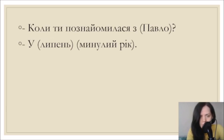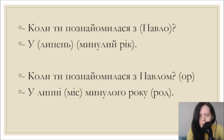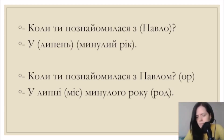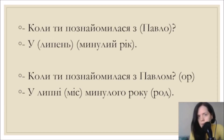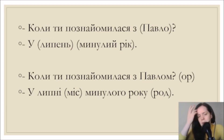The correct answer is: коли ти познайомилася з Павлом? With the verb познайомитися we use the preposition з - to meet with someone, познайомитися з кимось. Just like з цукром used instrumental case, the same happens with Pavlo: з Павлом - we use the masculine name in instrumental case. У липні means in July - to say something happened in a certain month, we use locative case.